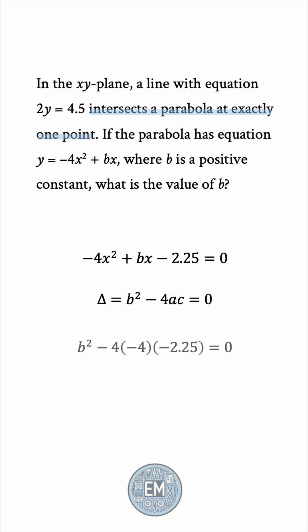Plugging in a equals negative 4 and c equals negative 2.25, we get b squared minus 36 equals 0. So b squared must be 36.